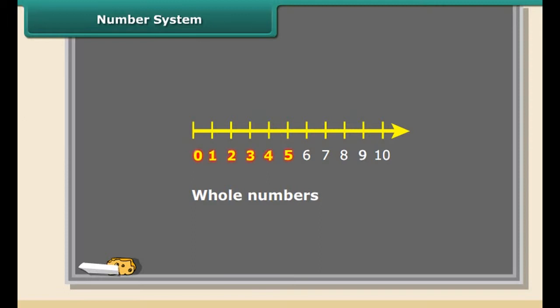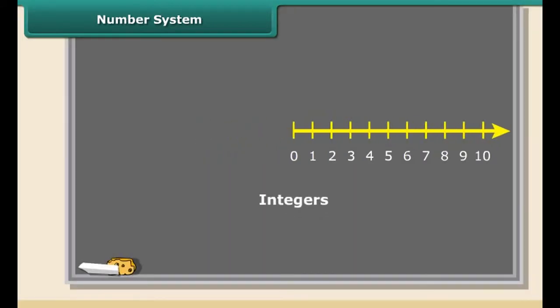Whole numbers are simply the numbers 0, 1, 2, 3, 4, 5 and so on. There are no fractions. Natural numbers are the positive whole numbers except 0.